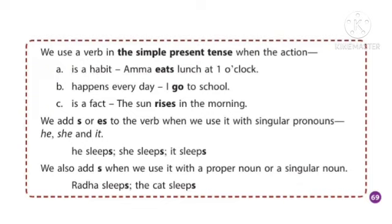We add S or ES to the verb when we use it with singular pronouns like he, she and it. For example: he sleeps, she sleeps, it sleeps. We also add S when we use it with a proper noun or a singular noun. For example: Radha sleeps — here Radha is the proper noun. The cat sleeps.